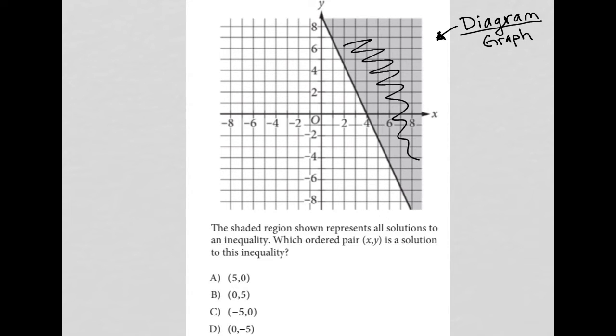We have this line. I can find the equation for this line, because I can see the x-intercept here. It looks like the y-intercept is 9. I can't say for sure, but it looks like it goes through 9. And I can find the slope. But let's read the question and see exactly what we're being asked to find. The shaded region shown represents all solutions to an inequality. Which ordered pair (x,y) is a solution to this inequality?